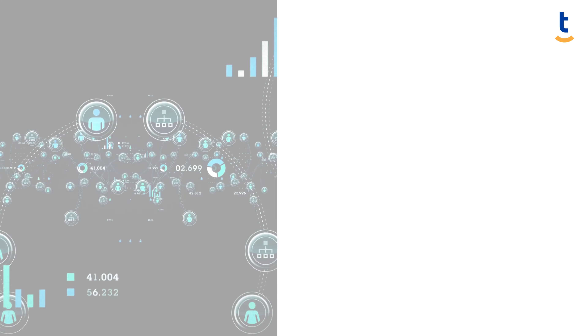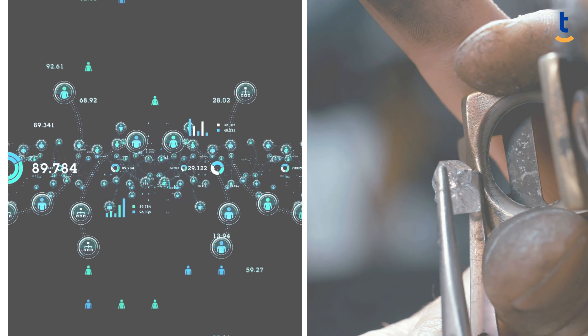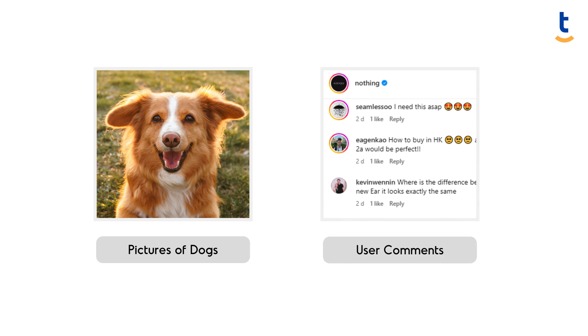Imagine raw data as rough diamonds straight from the mine. They hold potential, but they're not quite ready for the market. Some raw data examples are pictures of dogs taken by the camera, user comments on a specific product, etc.